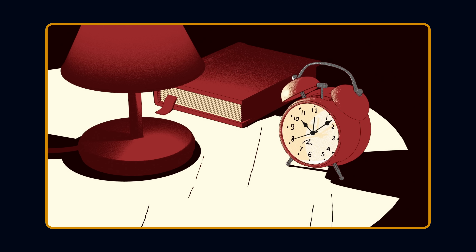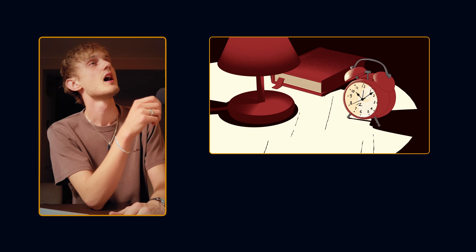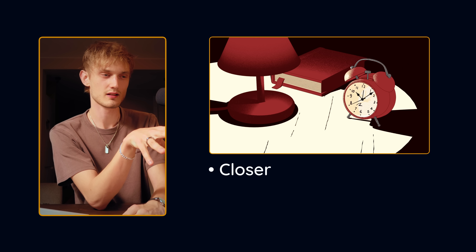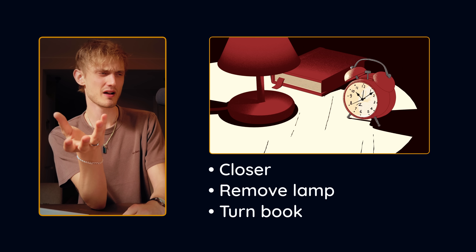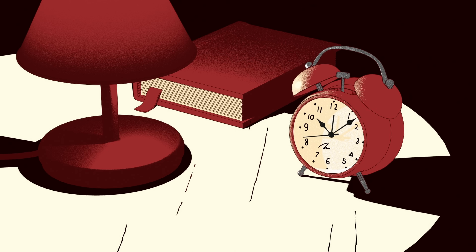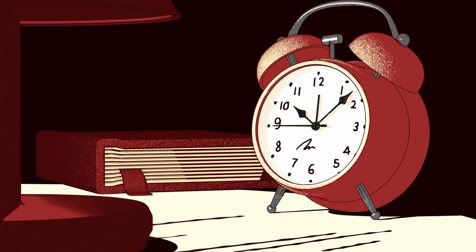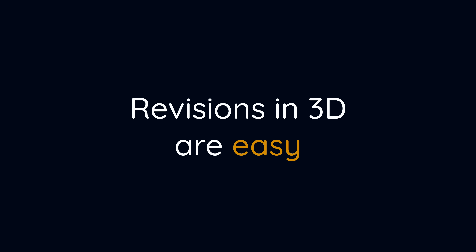Let's imagine a project that After Effects me does: alarm clock on a table. I send it off to the client. The client comes back with a revision — they want to be closer on the clock, remove the light, and turn the book around to see the spine. I would have to redraw a whole lot of it. But the Blender version of me says: yes, sir. Move the camera, spin the book, go grab a cup of coffee. Because revisions in 3D are so, so much easier.